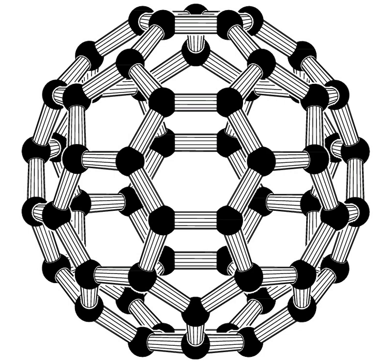Structure. Buckminsterfullerene is a truncated icosahedron with 60 vertices and 32 faces, 20 hexagons and 12 pentagons where no pentagons share a vertex, with a carbon atom at the vertices of each polygon and a bond along each polygon edge. The van der Waals diameter of a C60 molecule is about 1.01 nanometers. The nucleus-to-nucleus diameter of a C60 molecule is about 0.71 nanometers.